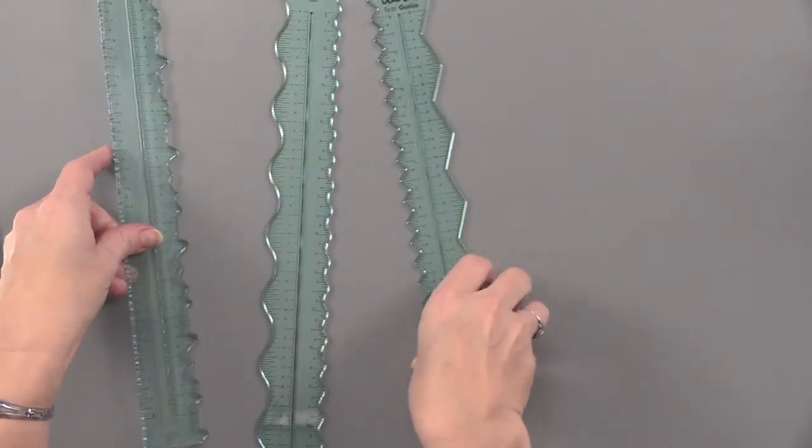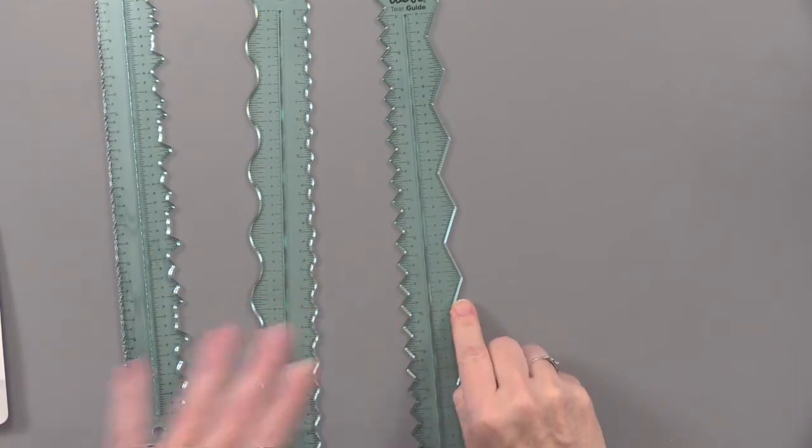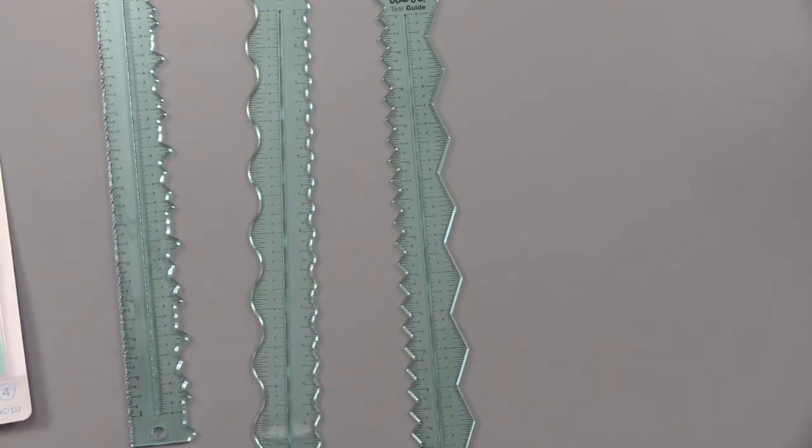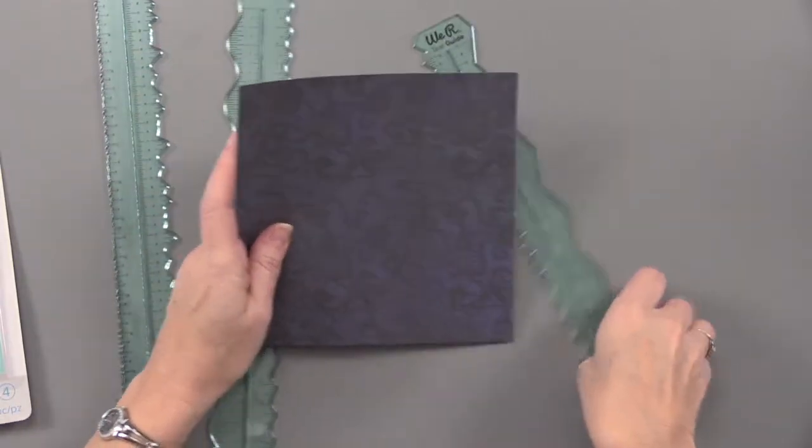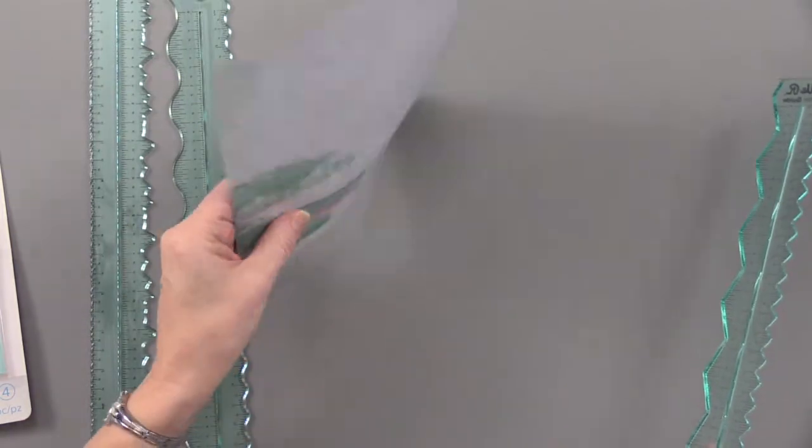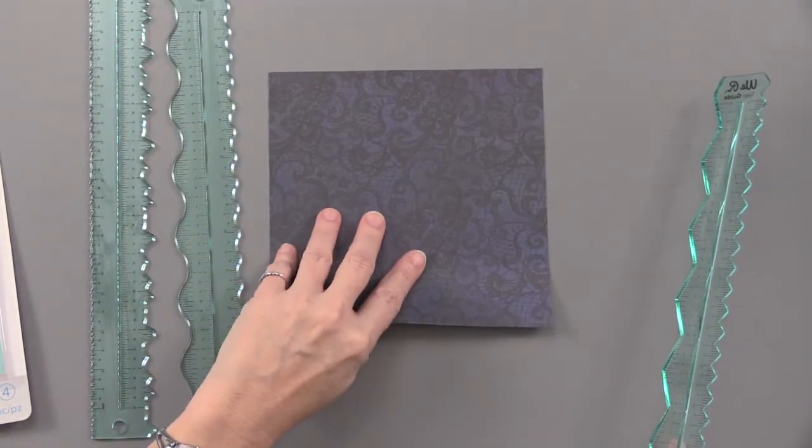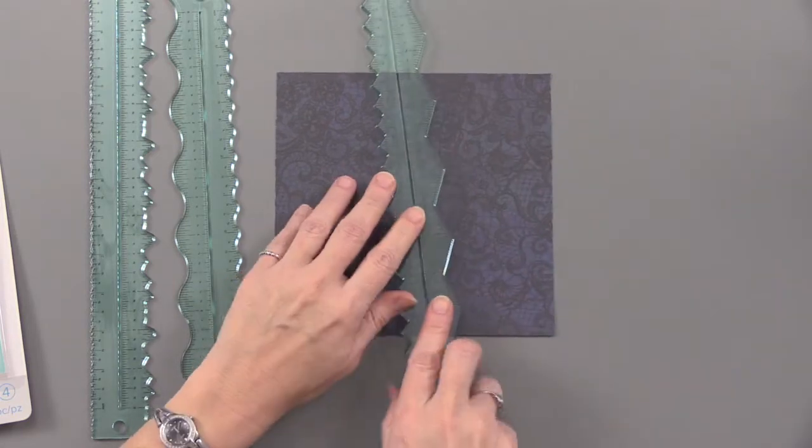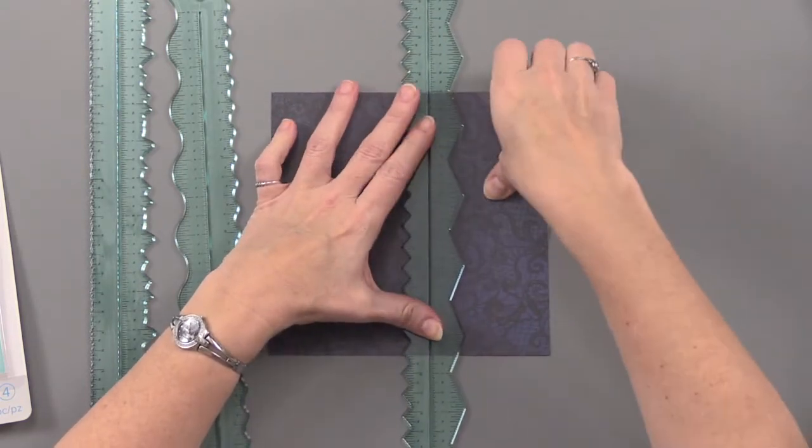I'll start with that nice long zigzag. I've got a double-sided paper here. You can do this with paper, and you can even do this with cardstock - you just have to do it a little bit at a time.